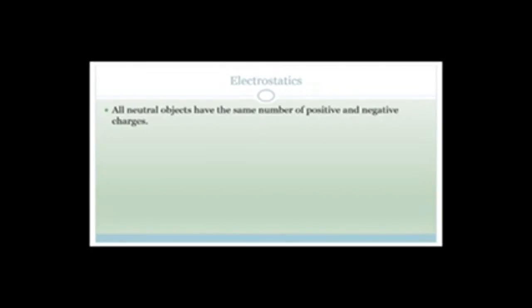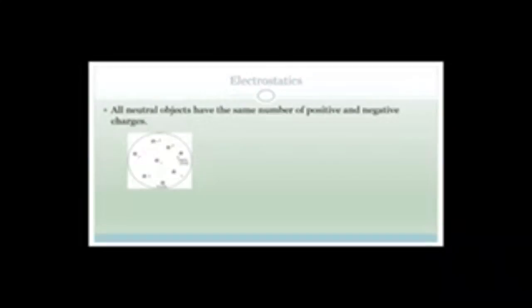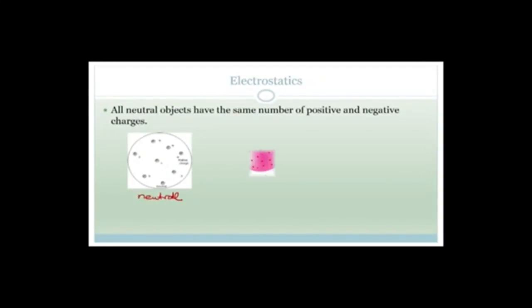There are things that have positive charges and negative charges. Neutral objects have the same number of positive and negative charges — for every negative there is a positive. We're talking about whether something is positively or negatively charged overall. You can charge something by causing it to gain or lose electrons. Remember, only electrons move — protons stay in the nucleus.